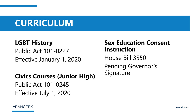House Bill 3550, now Public Act 101-579, mandates that sex education courses in grades six through twelve include age-appropriate discussions of the meaning of consent and recognizing what does and does not constitute consent. The law contains a detailed list of what does and does not constitute consent, making this an important addition to sex education in middle and high school.